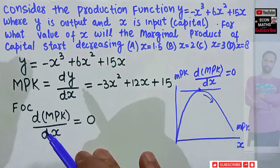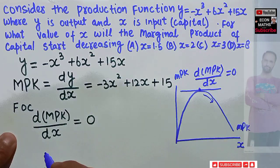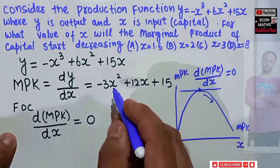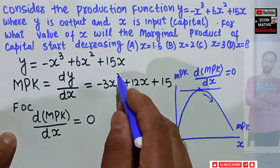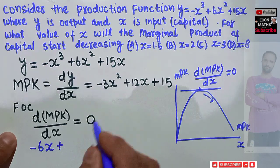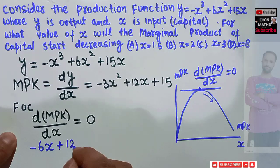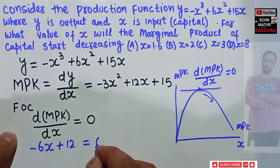Now that means we need to take the derivative of this marginal product of capital function again and set it equal to 0. Derivative of x² is 2x, so 2×(-3) = -6x. So we have -6x + 12 (derivative of 12x is 1, so we are left with 12) should be equal to 0.